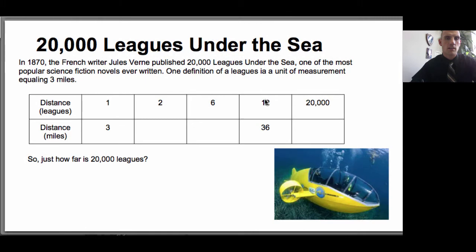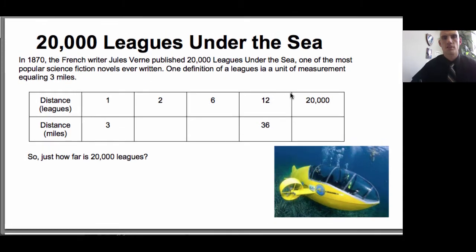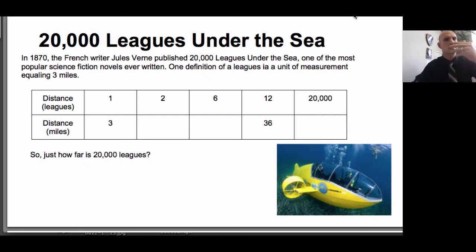The example we're given here is 20,000 Leagues Under the Sea. In 1870 the French writer Jules Verne published this book, one of the most popular science fiction novels ever written. One definition of a league is that one league equals three miles. So the problem we're thinking about here is: if one league is three miles, how do we make that leap to 20,000 leagues? When we're exploring proportional relationships, we're doing things that might seem simplistic like multiplication, but they have a deeper meaning. So let's explore just how far is 20,000 leagues.